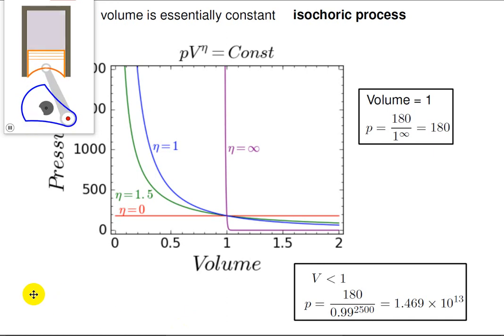I have another video for the isentropic process, and I've put a link in the description below. In that process, eta is equal to gamma, the ratio of heat capacities. That video shows a really short derivation of PV to the gamma equals to a constant. That's it. Thank you. Keep coming back.